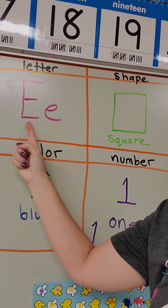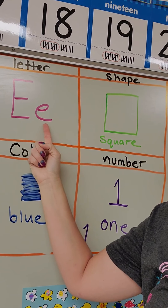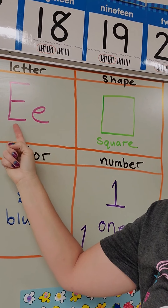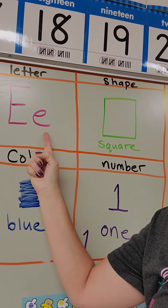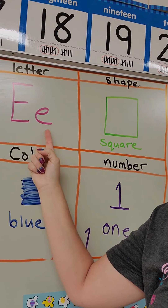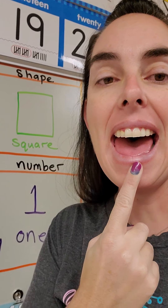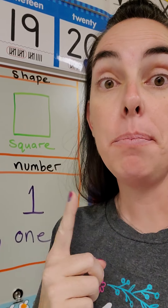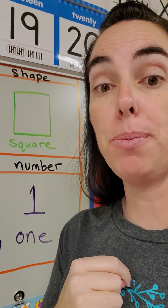This is uppercase E, lowercase E. Say E. Uppercase E, lowercase E. And E says eh, eh, eh. Make sure when I say it, you say it with me, okay?